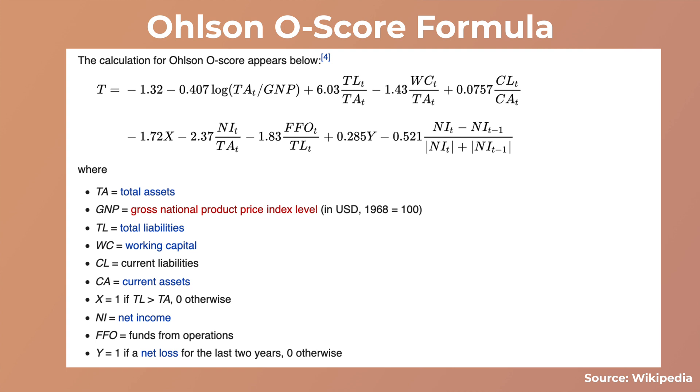You throw it all in and get out a number, which we then convert to a probability ranging on a scale of zero to one. If your company scores a one, the Olsen score predicts that company is going to go insolvent over the next couple of years. A score of zero means the company is in good financial standing and unlikely to go insolvent. The O-Score is said to be quite accurate — more accurate than the Altman Z-Score, and in some cases up to 90% accurate.